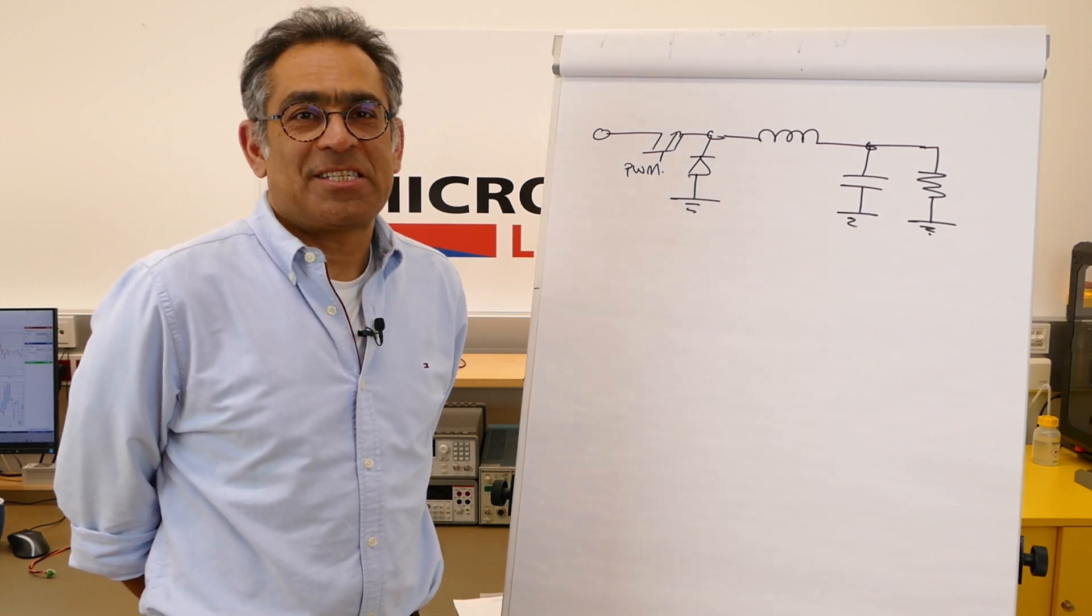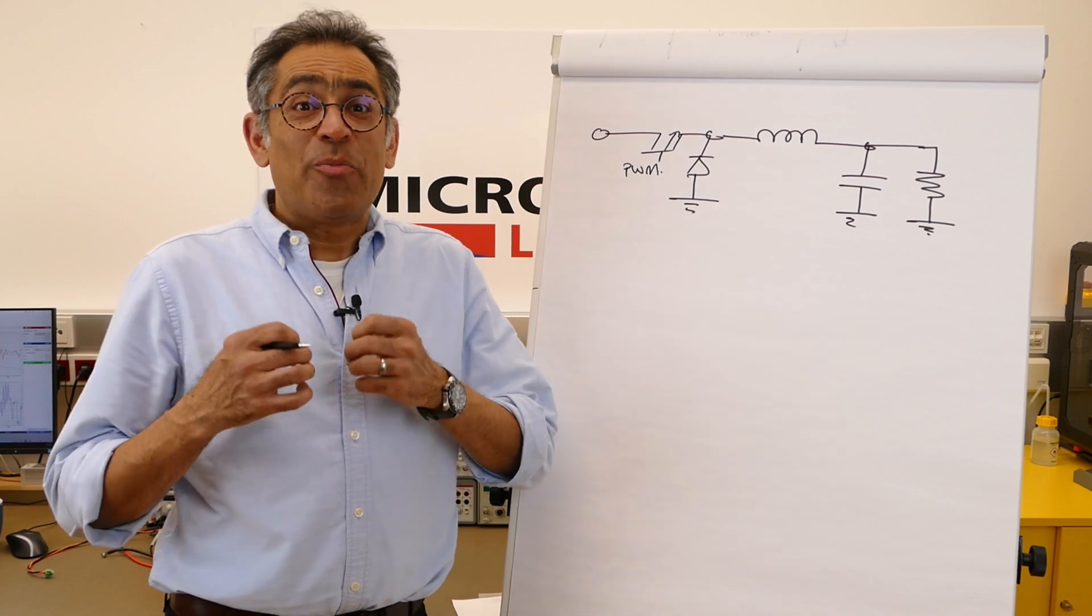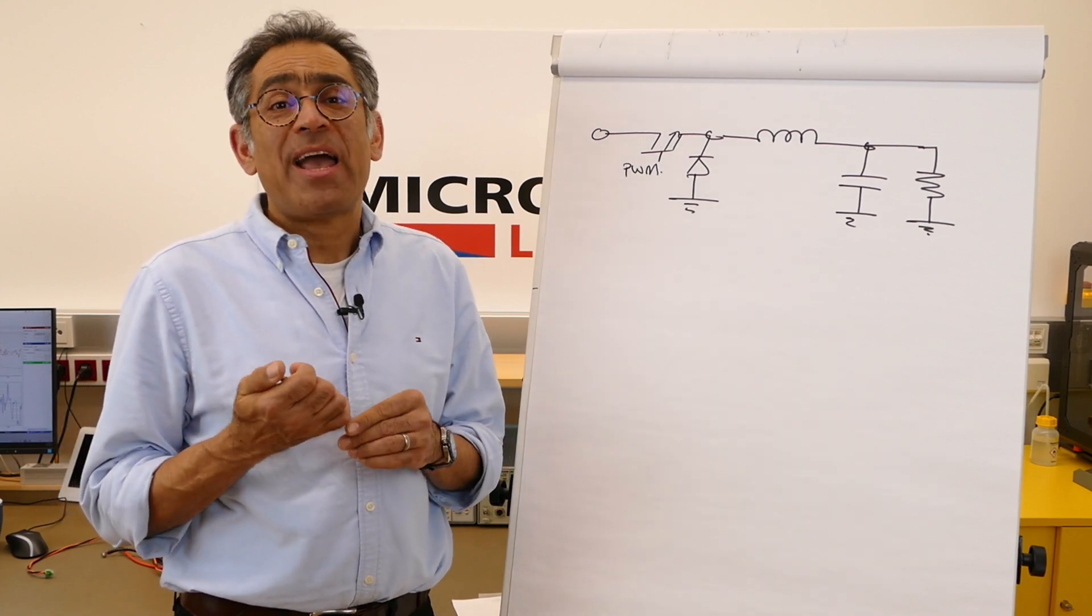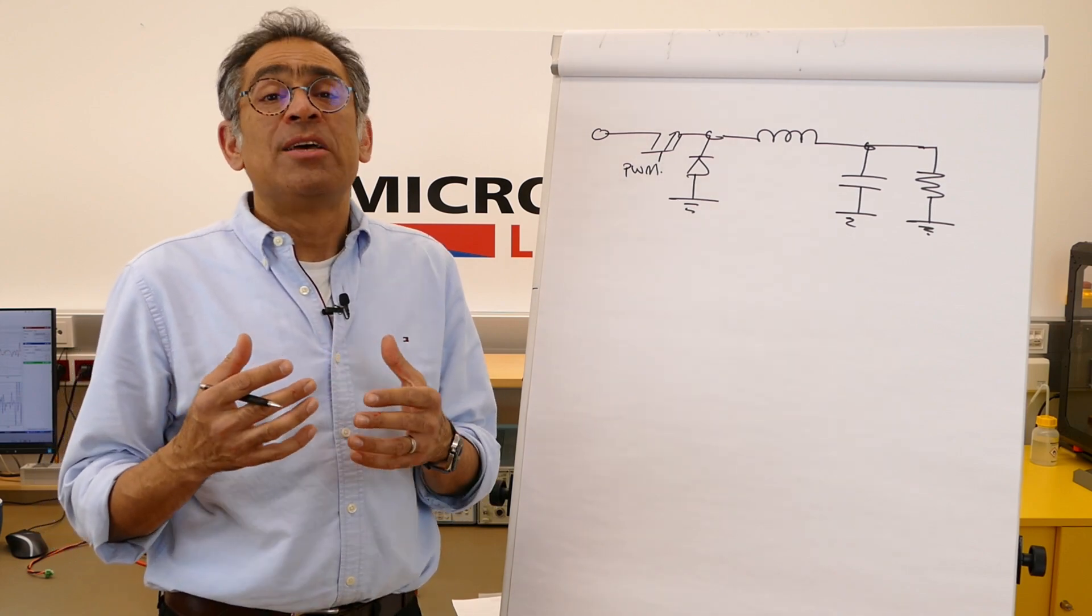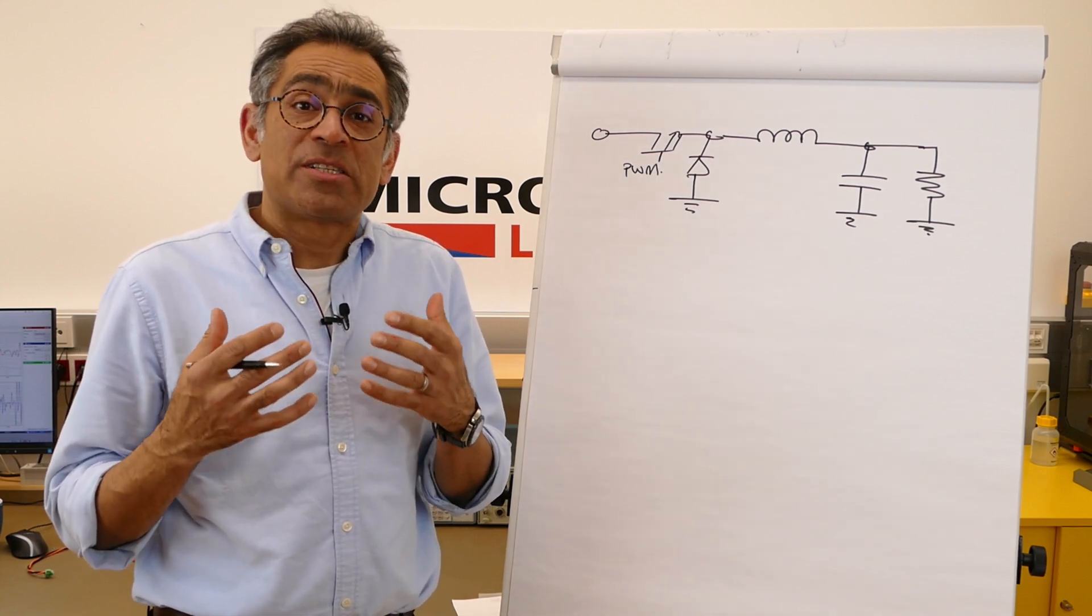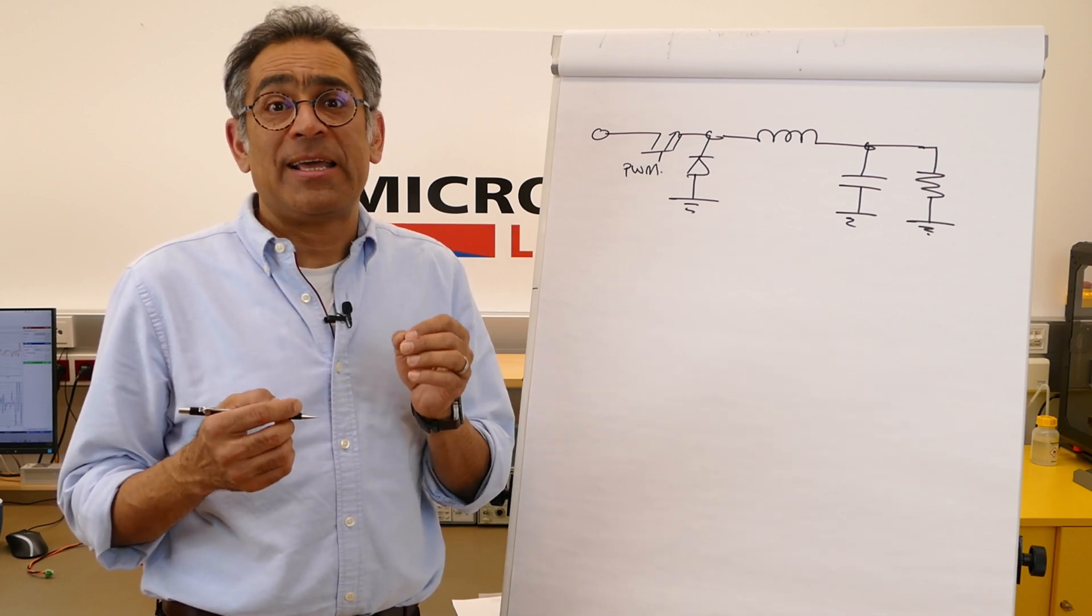Hi, my name is Ali Shiasava from Bridge Air Digital. You may have experienced or read in articles that if we add too much compensating ramp to a peak current mode controller, your power supply will start acting like voltage mode. In this video we're going to explain exactly why.